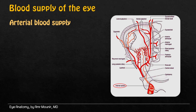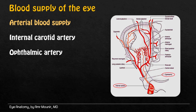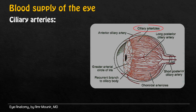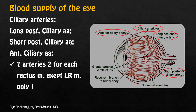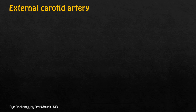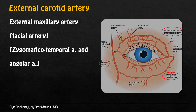Blood supply of the eye includes arterial blood supply by the internal corroded artery, which gives the ophthalmic artery. Ciliary arteries, which are branches of the ophthalmic artery, include long posterior ciliary artery, short posterior ciliary artery, and anterior ciliary arteries which are seven arteries — two for each rectus muscle — except the lateral rectus which has only one artery. The external carotid artery supplies the eye through the external maxillary artery, by facial artery, zygomatic or temporal artery, and angular arteries.